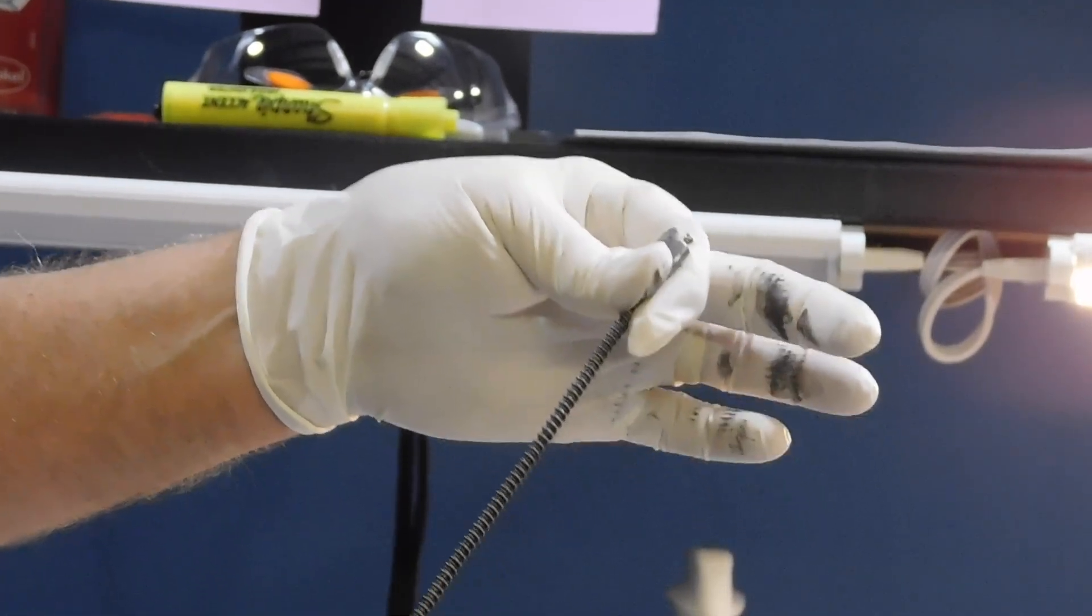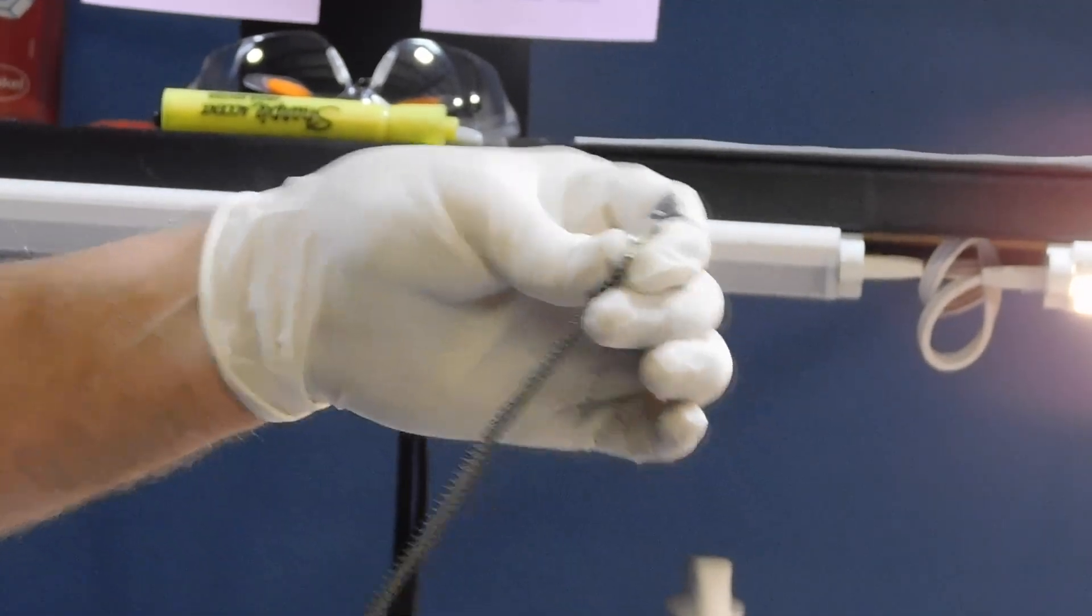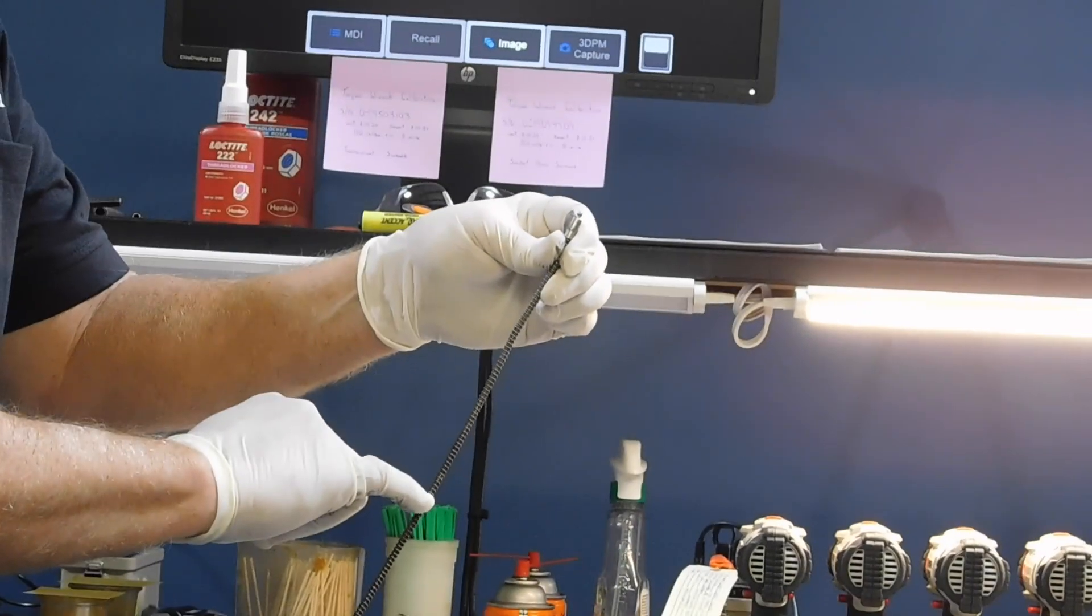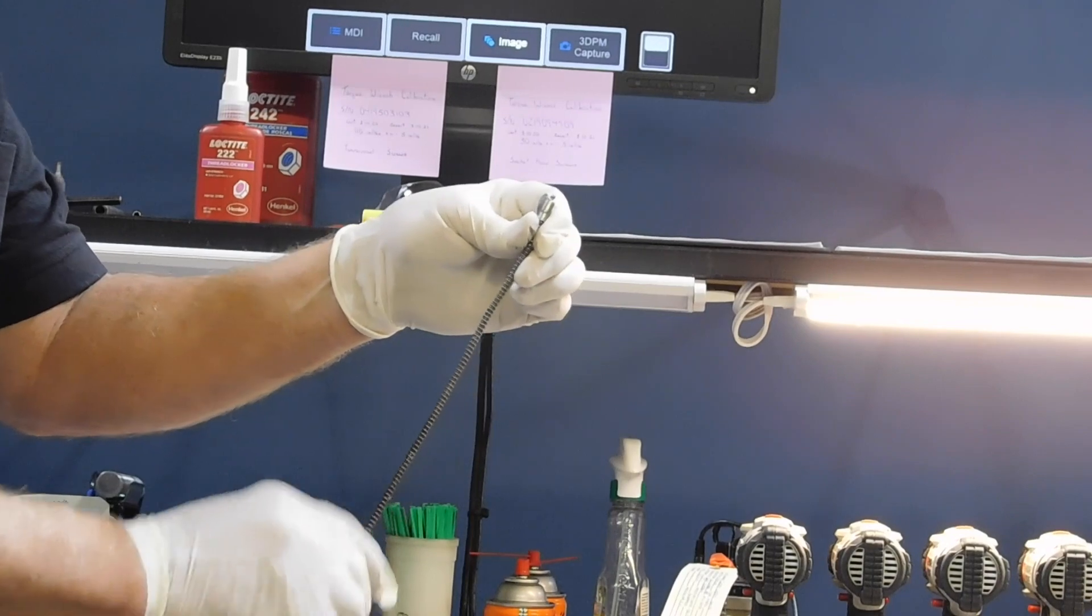So inspect for the rust, lubrication, flexibility, check your outer windings. Make sure there's no flattening of these outer windings. They're nice and evenly spaced.